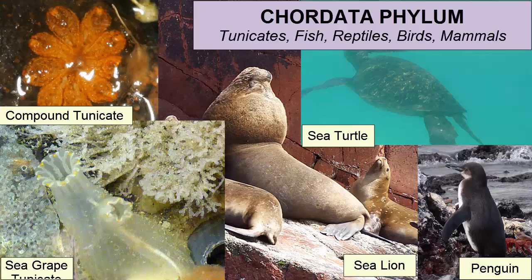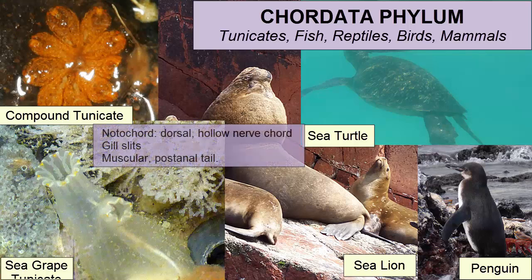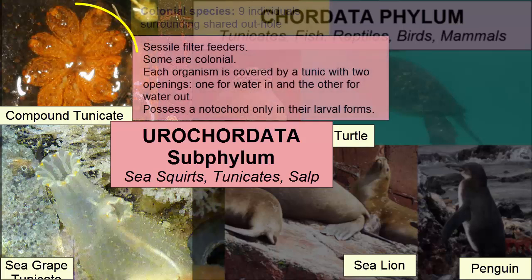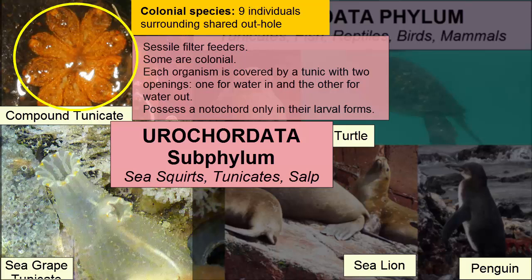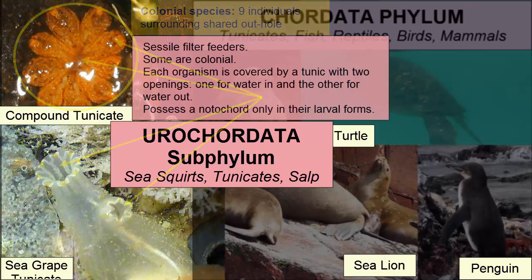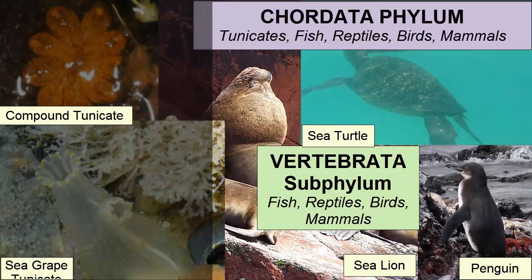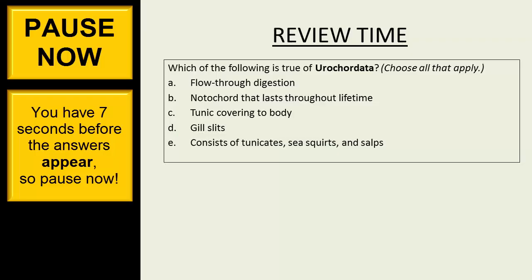The Chordata phylum consists of 45,000 species that share, at some point during their lifetime: a notochord, a dorsal hollow nerve cord, gill slits, and a muscular post-anal tail. This phylum has two subphyla. Subphylum Urochordata consists of mostly sessile filter feeders, some colonial, each covered by a tunic with two openings for water in and out. Urochordates possess a notochord only in their larval forms and include sea squirts, tunicates, and salps. Subphylum Vertebrata consists of chordates that retain their notochords.